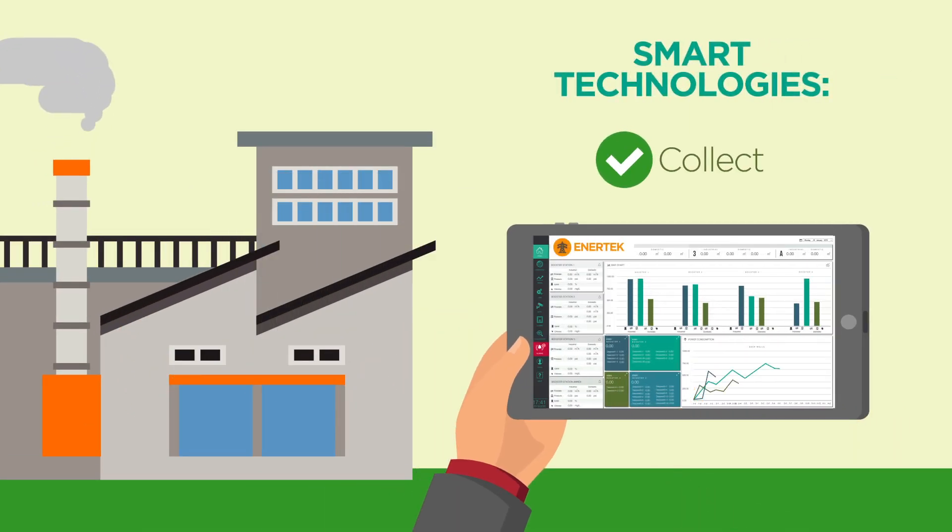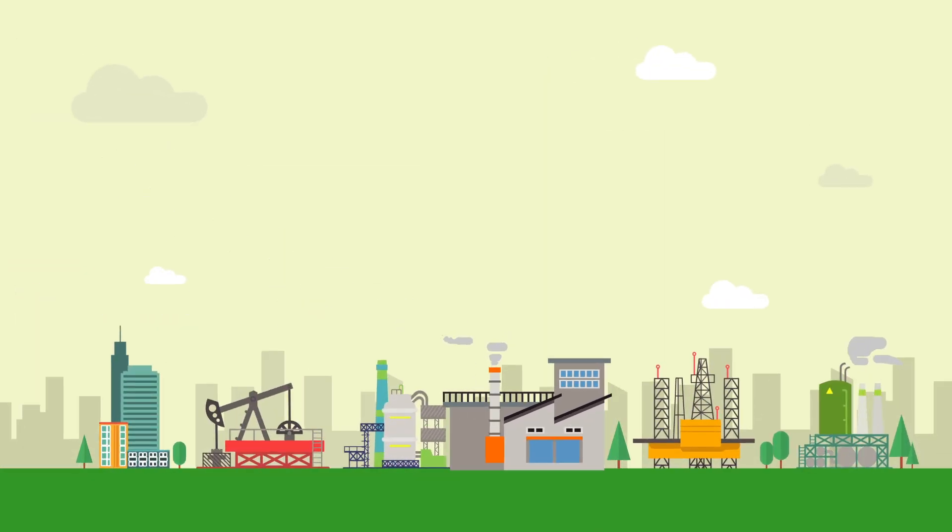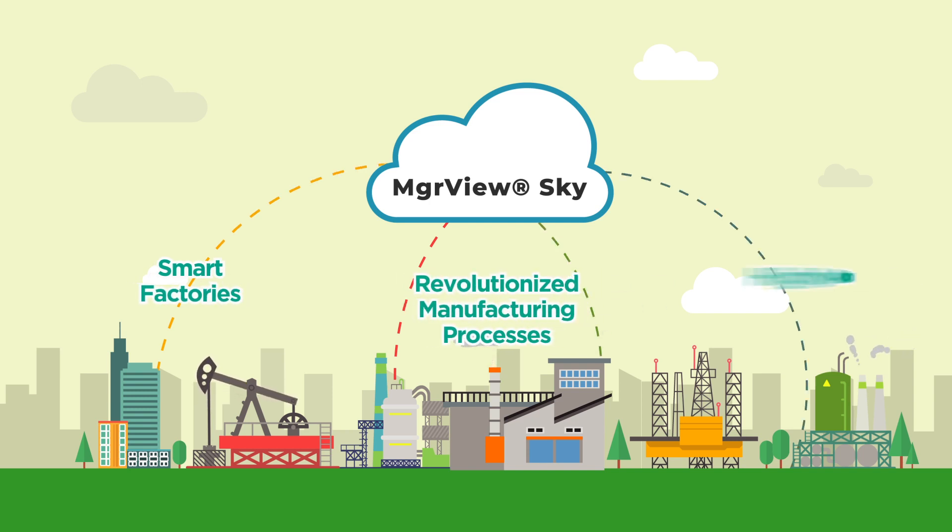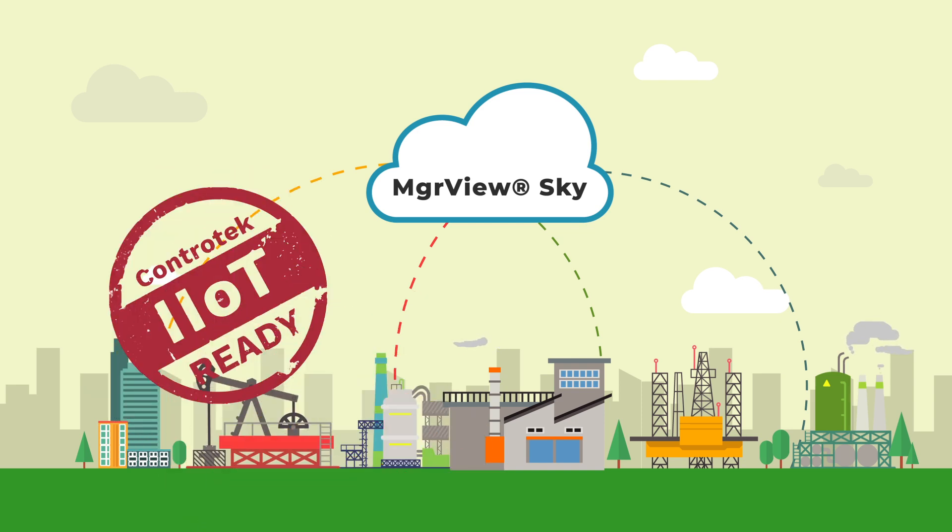It's about smart technologies that collect, analyze, and process big data in real time. It's about smart factories, revolutionized manufacturing processes, and highly automated on-site controls. IIoT is all about virtually unlimited potentials.